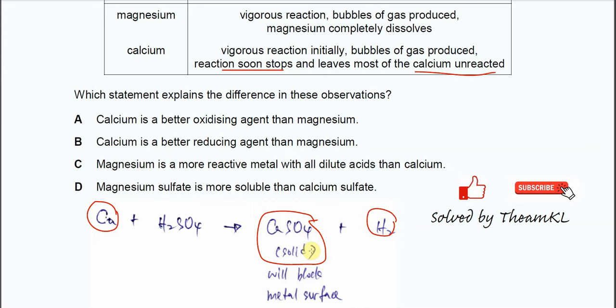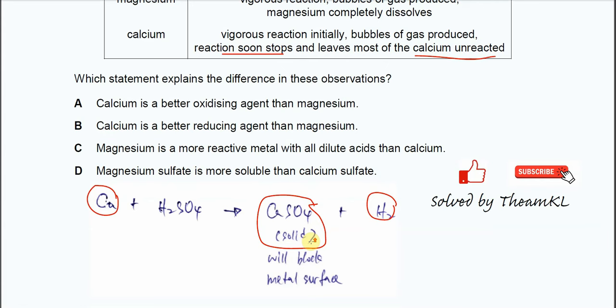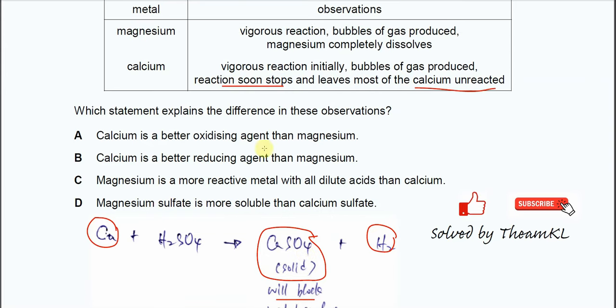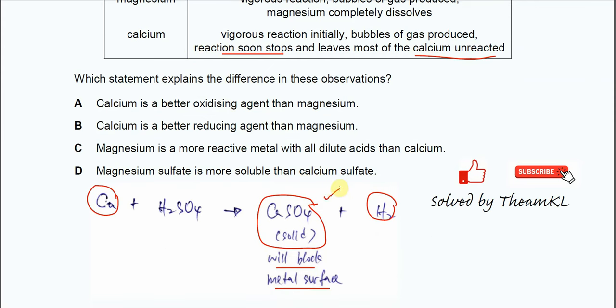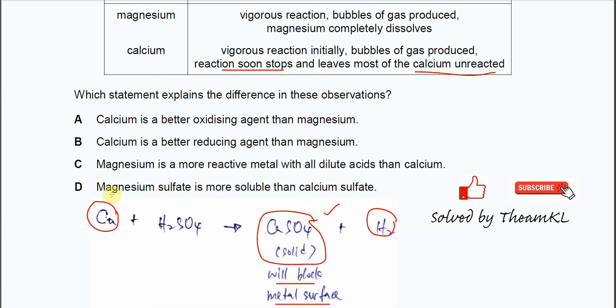It's going to be a solid or precipitate, and this solid will block the metal surface. Once it's formed, it will block the metal surface, and the calcium cannot further react with the acid. Therefore, answer is D.